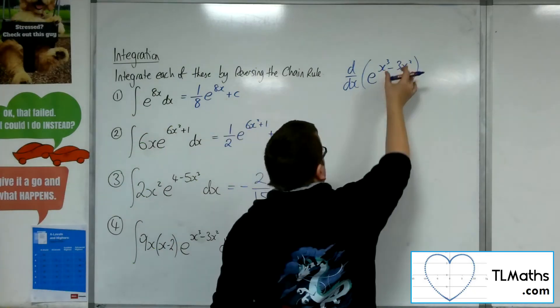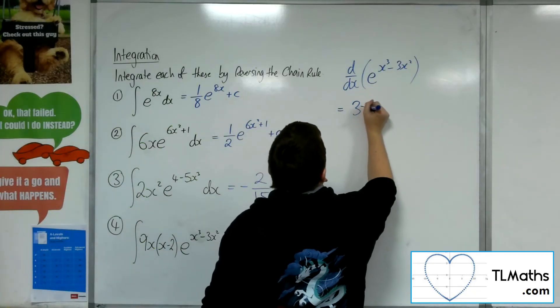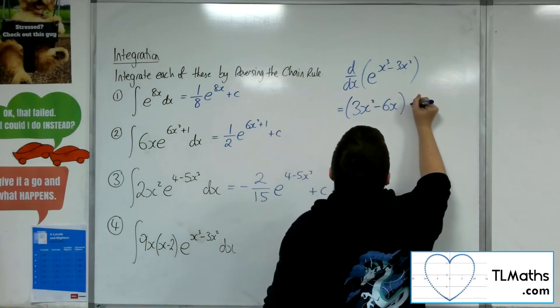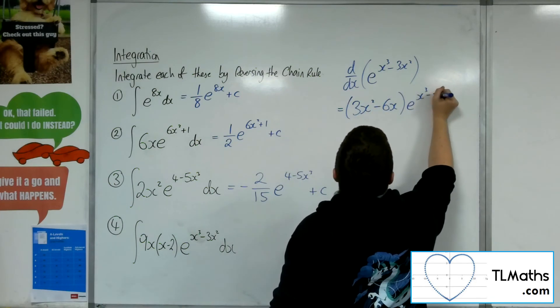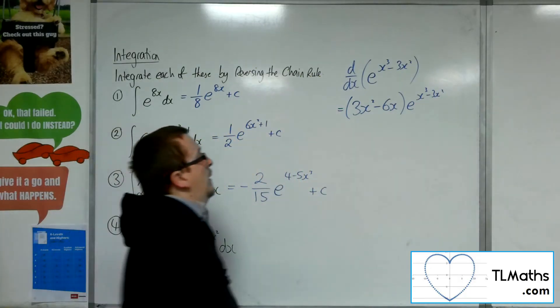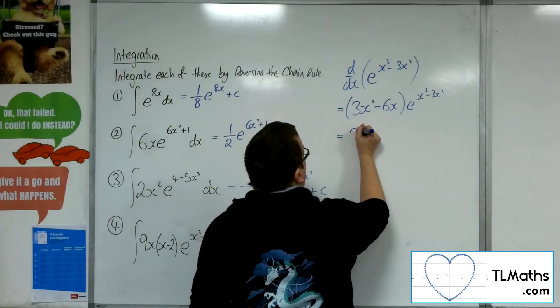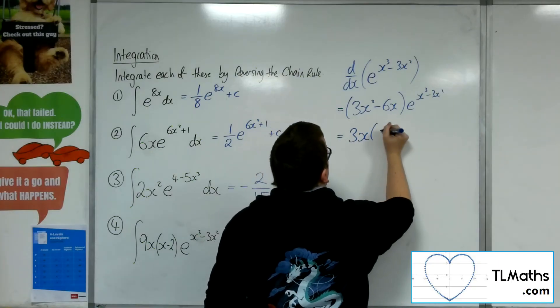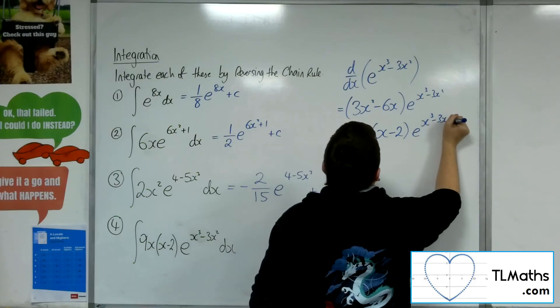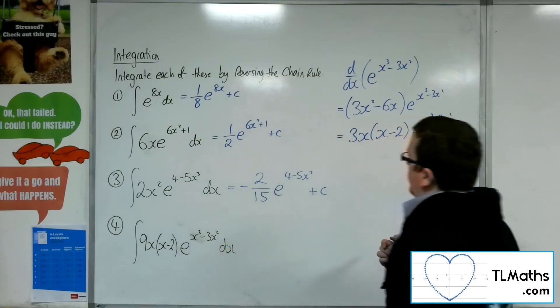So the derivative of what's inside is 3x squared minus 6x, e to the x cubed minus 3x squared. Now that bracket I can factorise. So I'm going to pull out the 3 and an x and have left x minus 2. So it's now in the format of the question.